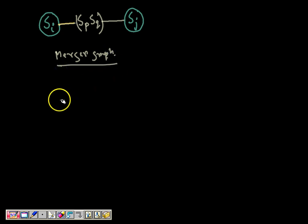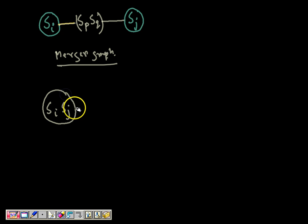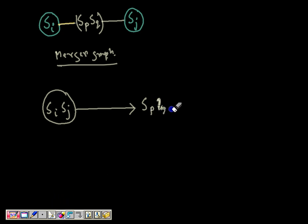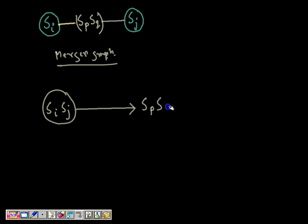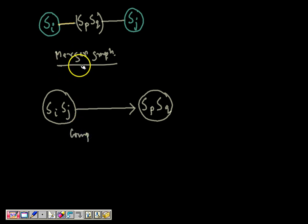In the compatibility graph, each vertex will represent a pair of compatible states, and they are going to have a directed arc to their implied pair. So if Sp, Sq is the implied pair, then Si, Sj will have a directed arc to Sp, Sq. This is the compatibility graph for the above merger graph.